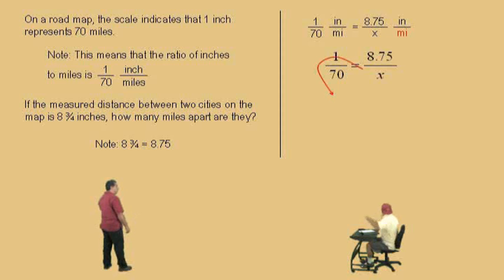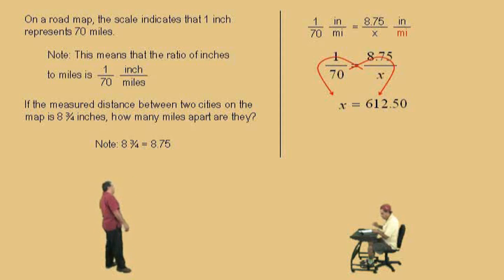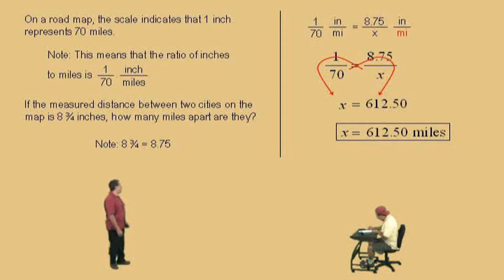And what do we do, Charlie? Cross-multiply. That's right. X times 1 is x, and what's 70 times 8.75? 612.5. Very nice there, Charlie. And so, 612.50 miles. That's how far apart the cities are according to that map.